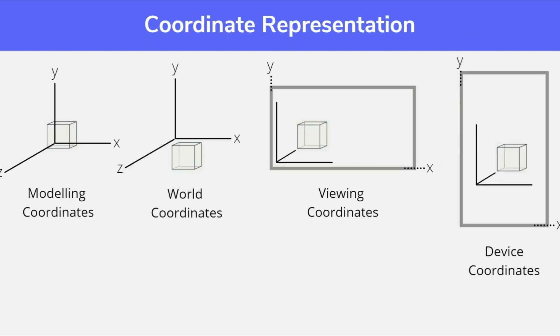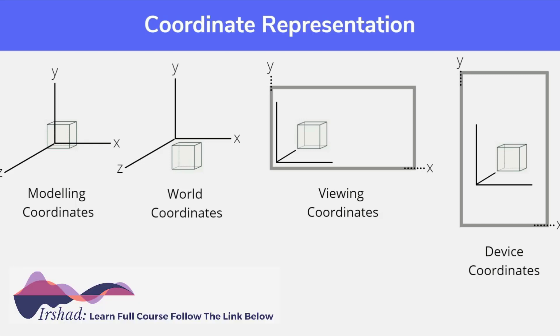Objects can be represented in three dimensions with different coordinate frames: modeling coordinates, world coordinates, viewing coordinates, and device coordinates. All of these frames of reference happen in a series — first we create and design the object using modeling coordinates, then we place the object in space using world coordinates to determine its location. Then we translate this 3D scene into a 2D scene on a certain viewing plane, and after that we use device coordinates or screen coordinates to represent the points on screen.